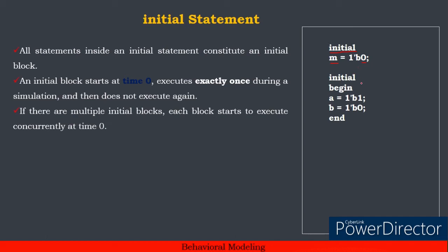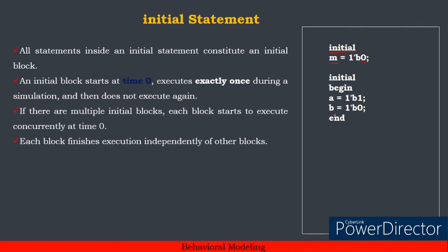Suppose multiple initial blocks are used. If there are two initial blocks, they will execute concurrently and start execution in parallel. If m is equal to 0, then a is equal to 1 and b is equal to 0. Each initial block executes separately, but each execution starts at the same time.